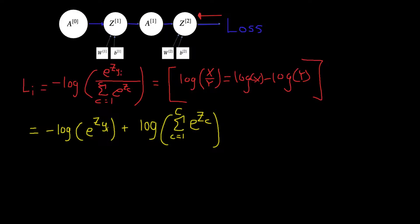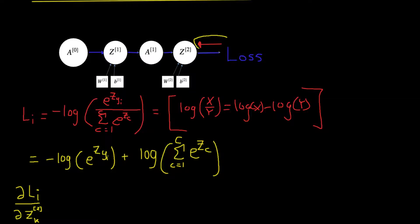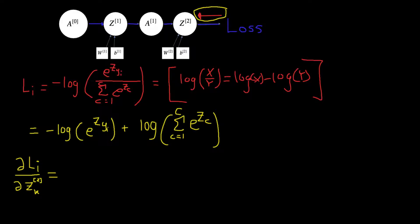This is how we can write the loss. Now what we want to compute is the derivative of the loss with respect to Z2 for a particular node K. We just write the derivative first. For the minus log term, we can recognize that we have log of E, so log E of E — these two will cancel, giving us minus Z_yi.